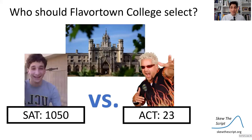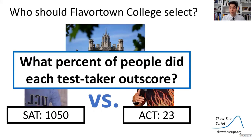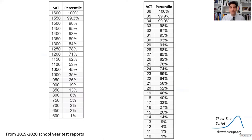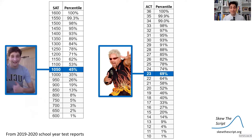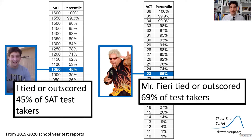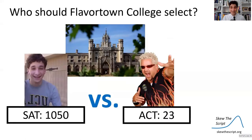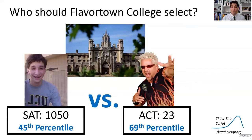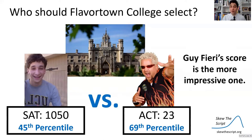Let's get back to the question: who should Flavor Town College select? We can ask what percent of people did each test taker outscore. Looking at the percentile tables for the SAT and ACT: my score of 1050 puts me at the 45th percentile, and Guy Fieri's score of 23 on the ACT puts him at the 69th percentile. Guy Fieri tied or outscored 69% of test takers, so with a higher percentile he has the more impressive score — Flavor Town College should select him.